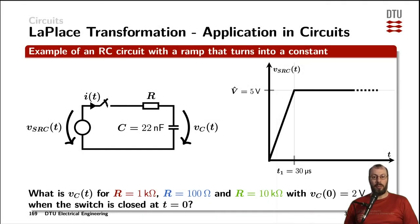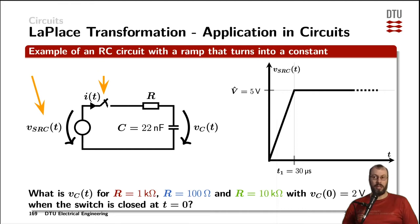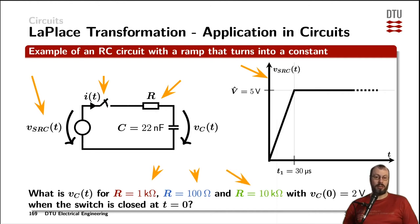Now let's apply the Laplace transformation to a very specific circuit. We've got a voltage source on the left hand side, and a switch in the circuit which is getting closed at time zero. We want to investigate the circuit for three different resistances: one kilo ohm, a 100 ohm resistor, and a 10 kilo ohm resistor. That is going to be a parameter that we're going to change later.